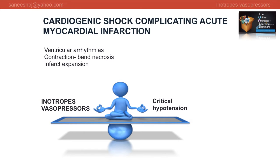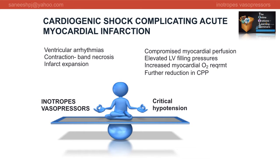On the other hand, critical hypotension will result in further compromised myocardial perfusion, elevated LV filling pressures, raised myocardial oxygen requirement, and further reduction in coronary perfusion pressure. All of these mean that you may lose your patient. So I would choose in favor of picking an inotrope or vasopressor.